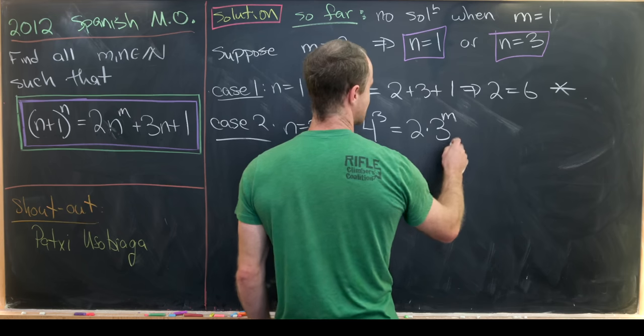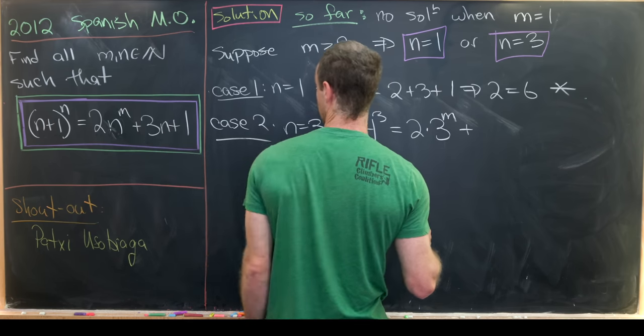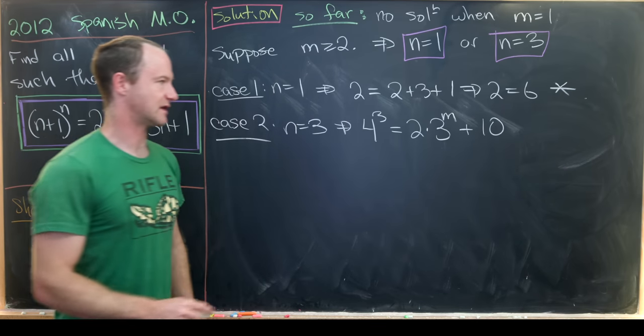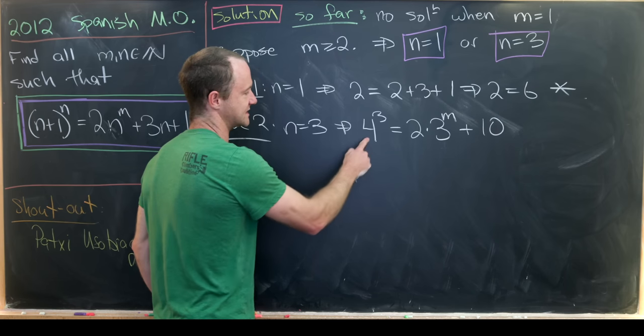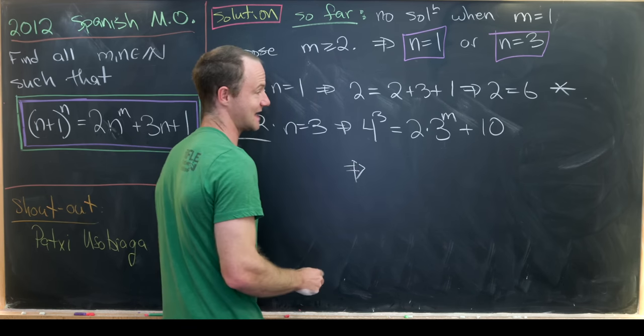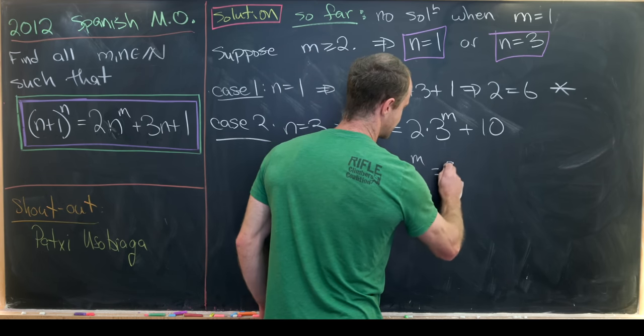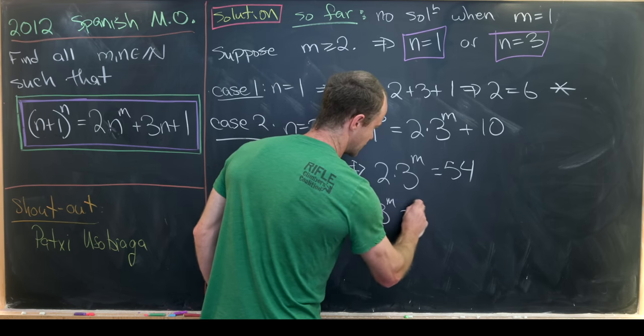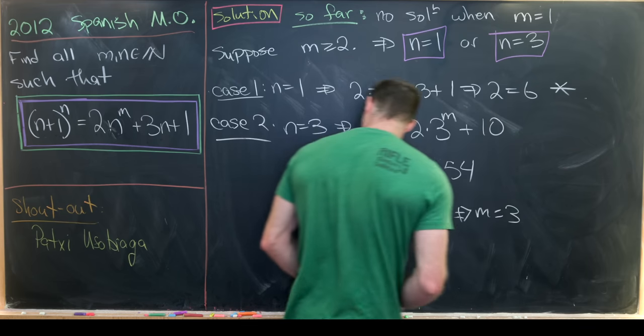Anyway, we've got 2(3^m) plus, so 3 times 3, which is 9, plus 1 is 10. So we've got something like that. But that's actually easy to simplify. 4^3 is 64 minus 10 is 54. So we have 2(3^m) equals 54, which tells us that 3^m equals 27, which tells us that m equals 3.